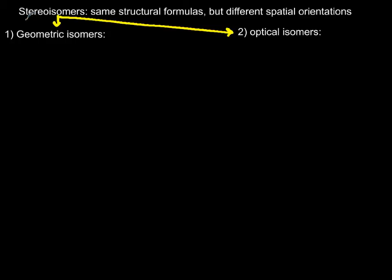The second category of isomers I'd like to review with you are known as stereoisomers. They have the same connections of elements but different spatial orientations, and it's broken into geometric isomers and optical isomers.